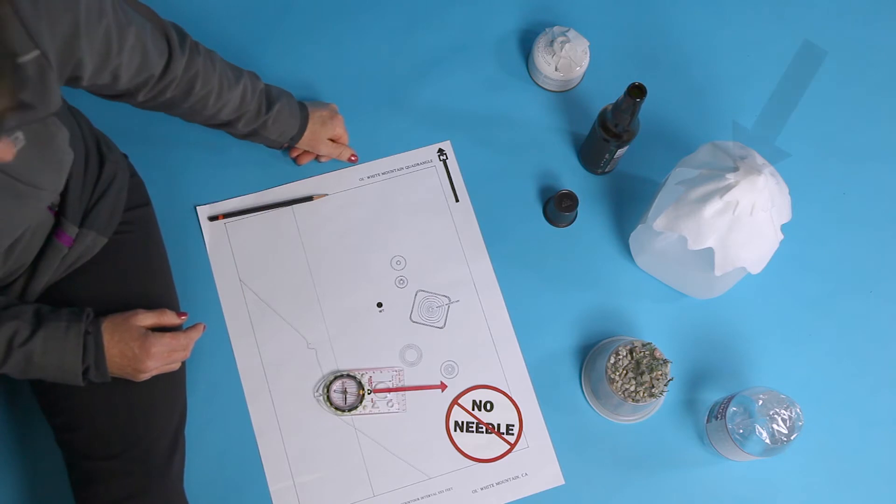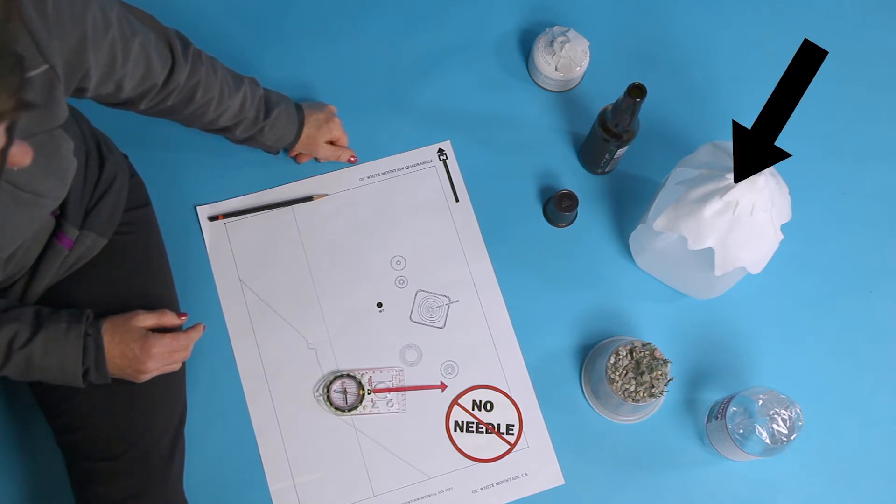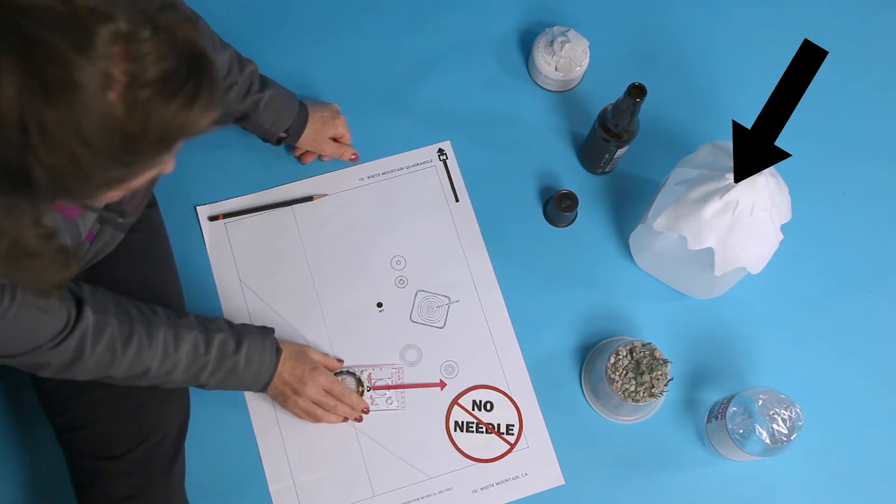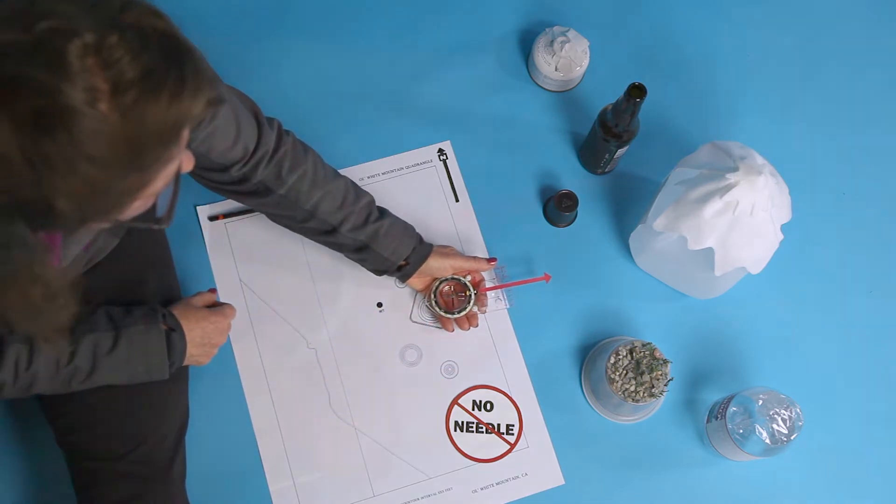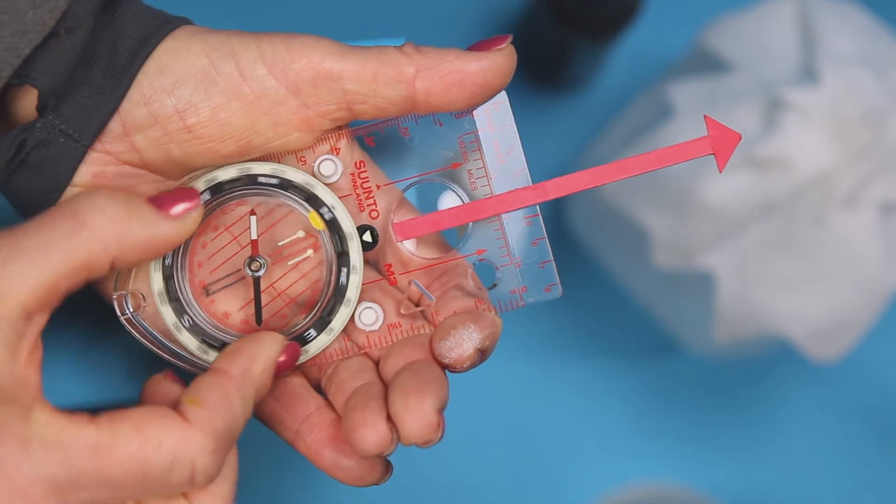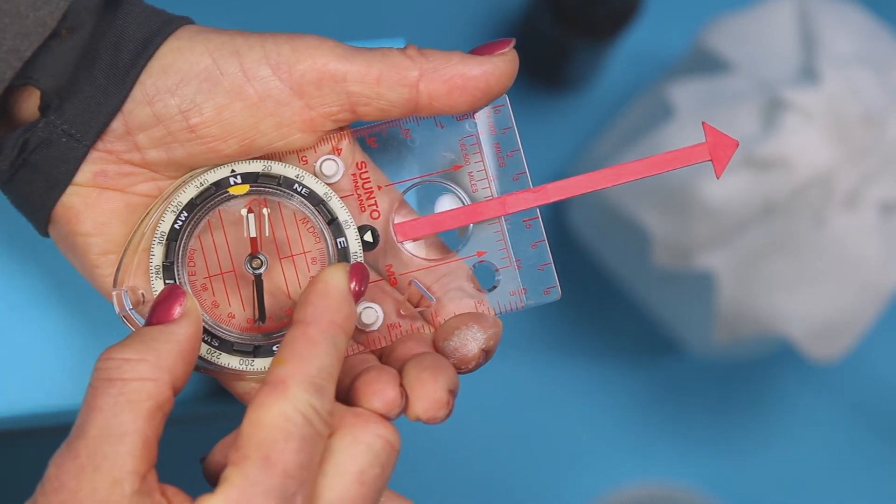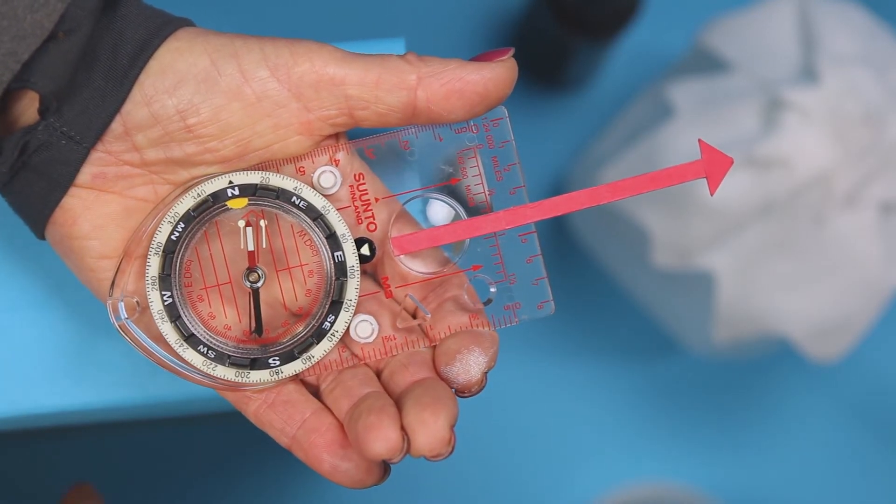If you want to identify a feature you see in the field, start by taking a field bearing on that feature. You got this! Point the direction of travel arrow at the feature. Turn the ring to trap the needle and set the bearing. Match red with red. Read the bearing at the bearing pointer.